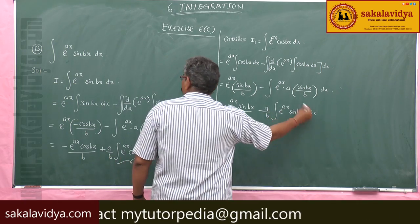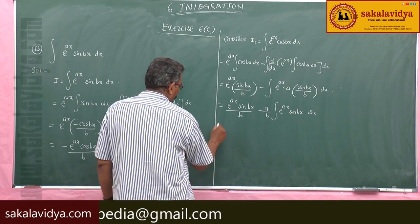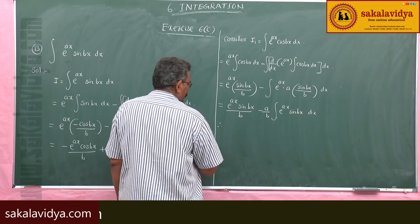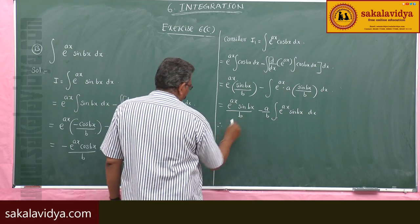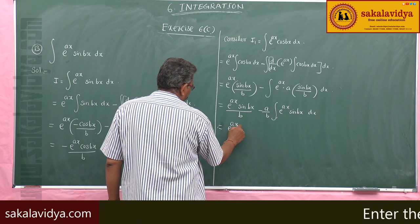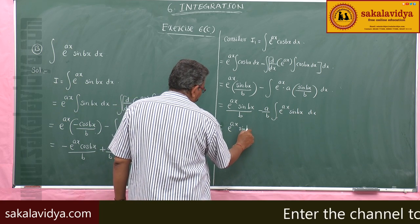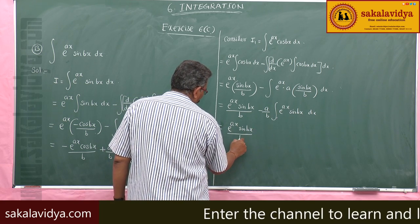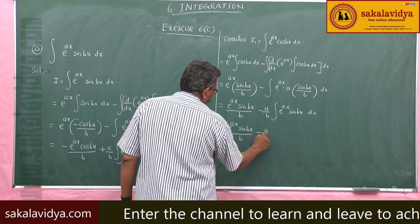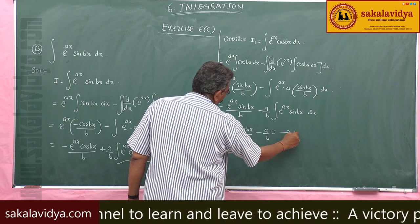That is why in the place of this integral we write I. Therefore, I₁ equals to e power ax sin bx by b, minus a by b times I — say equation 2.